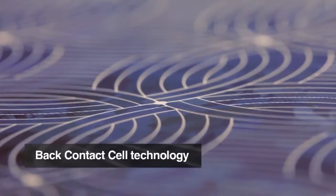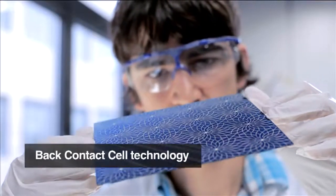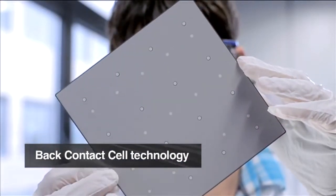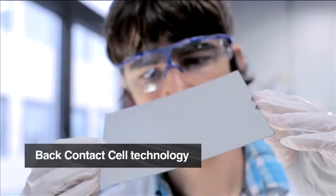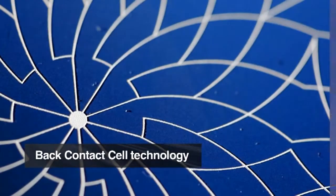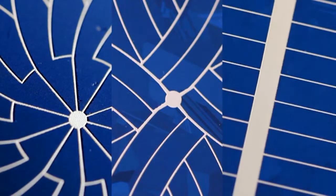ECN's metal wrap-through technology is now in production. This back contact cell has a higher cell efficiency and a high module power output compared to conventional H-pattern cell and module technologies.